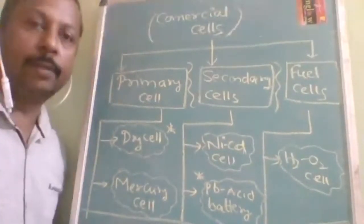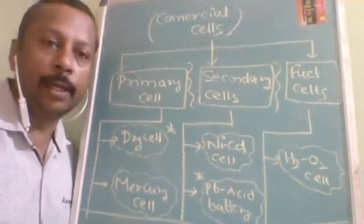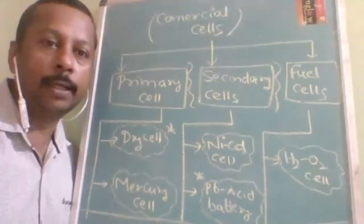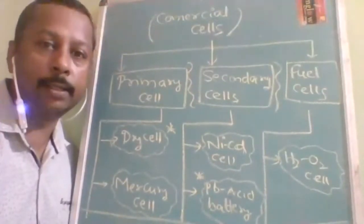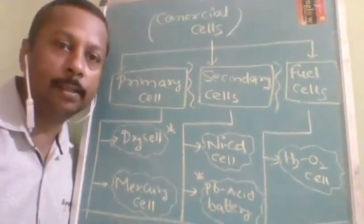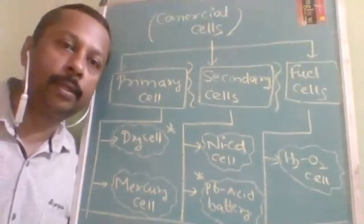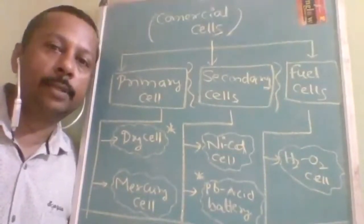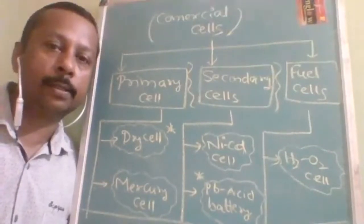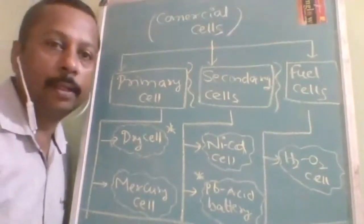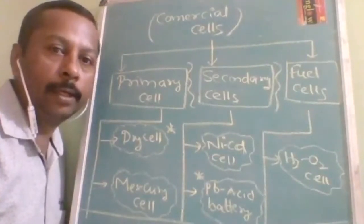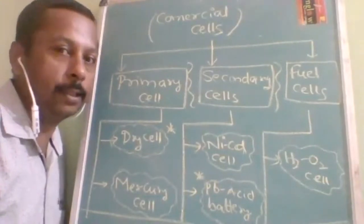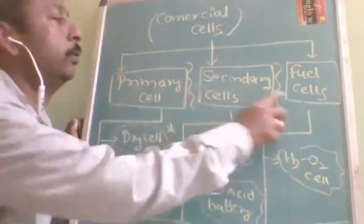Commercial cells means the utilization of electrochemistry in our daily life. Whatever electronic devices we use require electrical energy. By using chemical energy and converting it for use in electrical devices, those cells used for this purpose are called commercial cells. Based upon their utility, they are divided into three types: primary cell, secondary cell, and fuel cell.